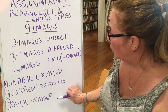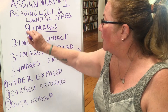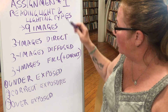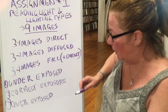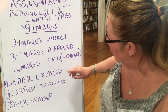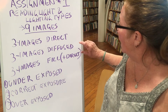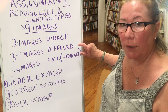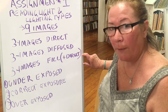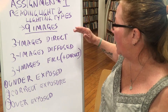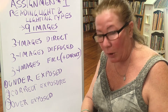So we'll have one each of these three exposures for each type of light, for a total of nine images — three images in direct, three in diffused, and three in fill light. The direct light will have an under, a correct, and an overexposed; the diffused light will have an under, a correct, and an overexposed; and fill light will as well. That's really important so you can see how your camera works.